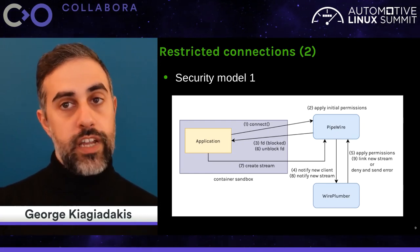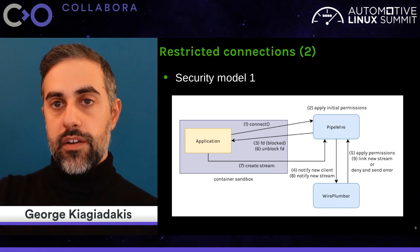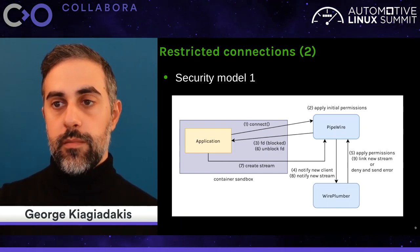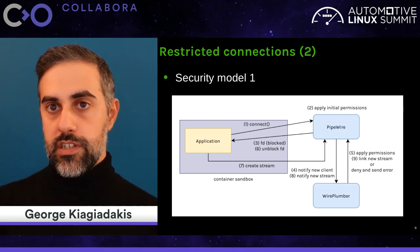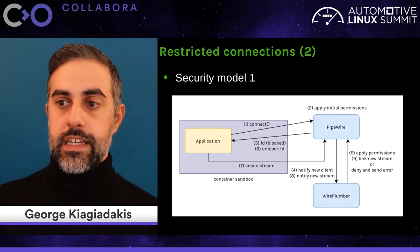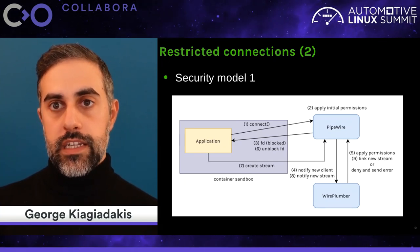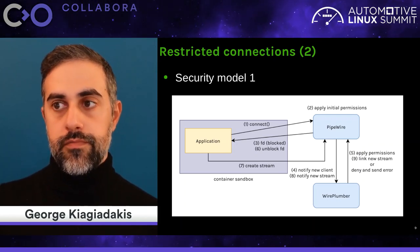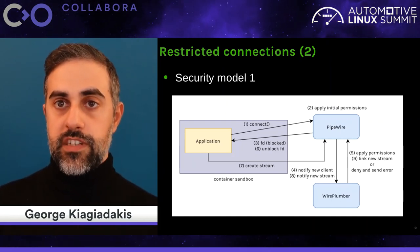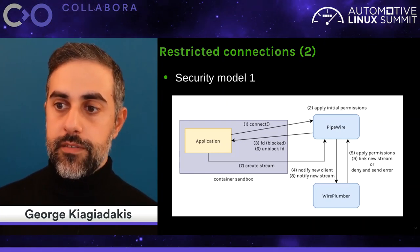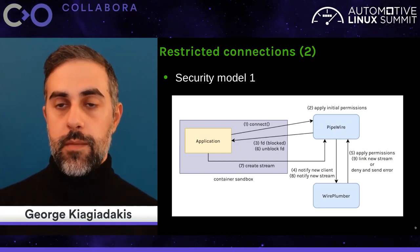When the application creates a stream, PipeWire notifies the session manager that a new stream is available. The session manager checks whether this client is allowed to create this kind of stream. If permitted, the new stream is linked to a target — another node, another application, or a device. If the application is not permitted, an error is returned and the application is denied that stream. PipeWire sends the error back and the application bails out.